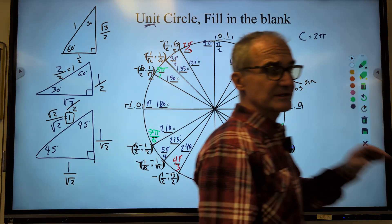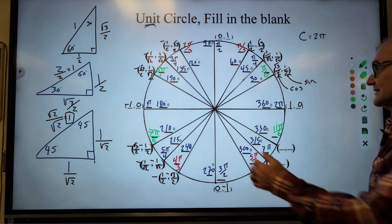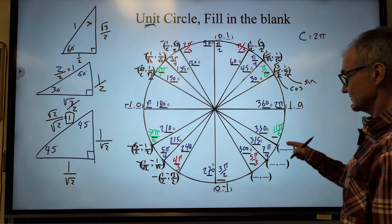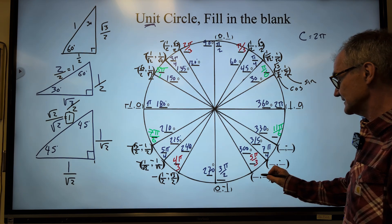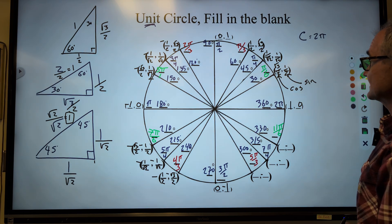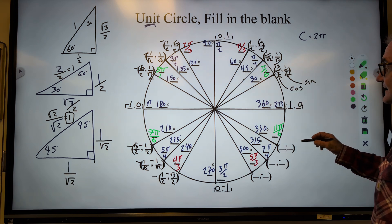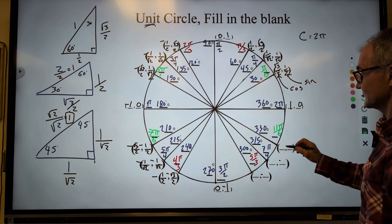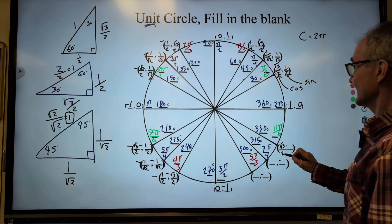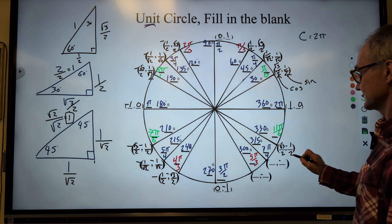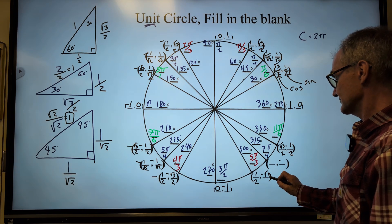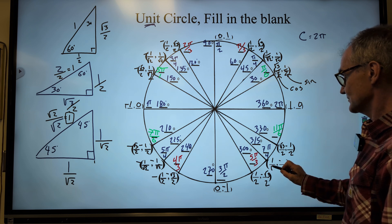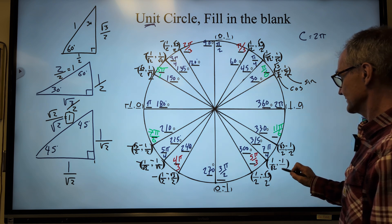And finally over here in my fourth quadrant. I am over positive. So the first value, the cosine value, will be positive. But these will all be negatives. So I'm going to copy the same things down again. Here's my 30 degree reference. It's going to be root 3 over 2 and negative 1 half. Remember these are reversed. So this is positive 1 half, negative root 3 over 2. And this is 1 over root 2 and negative 1 over root 2.